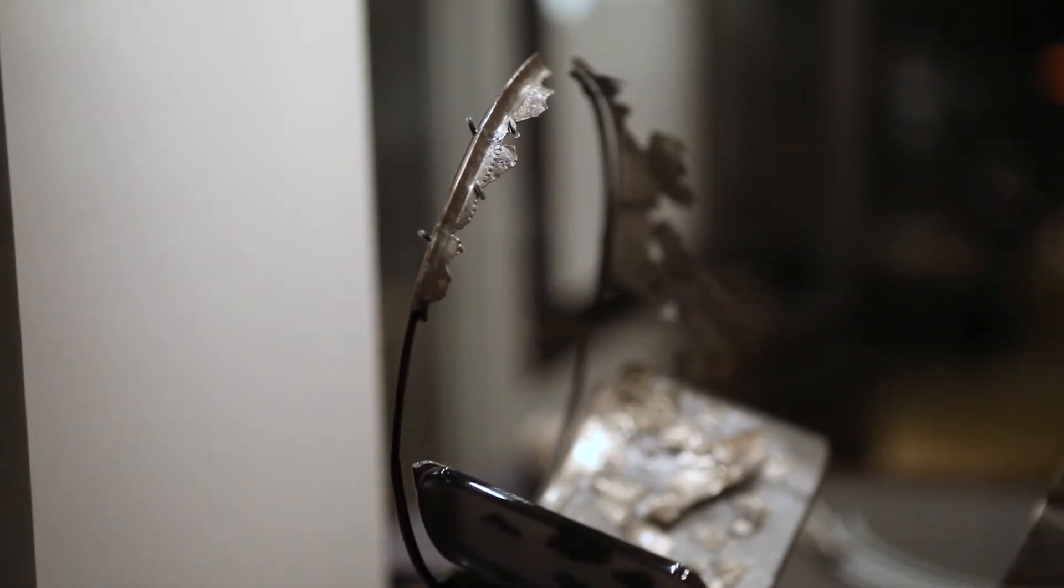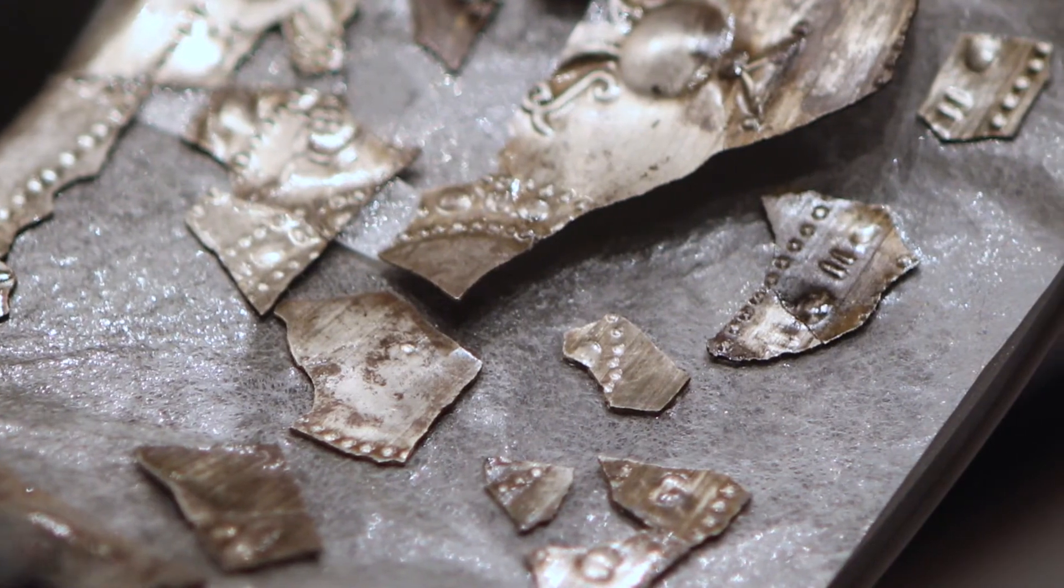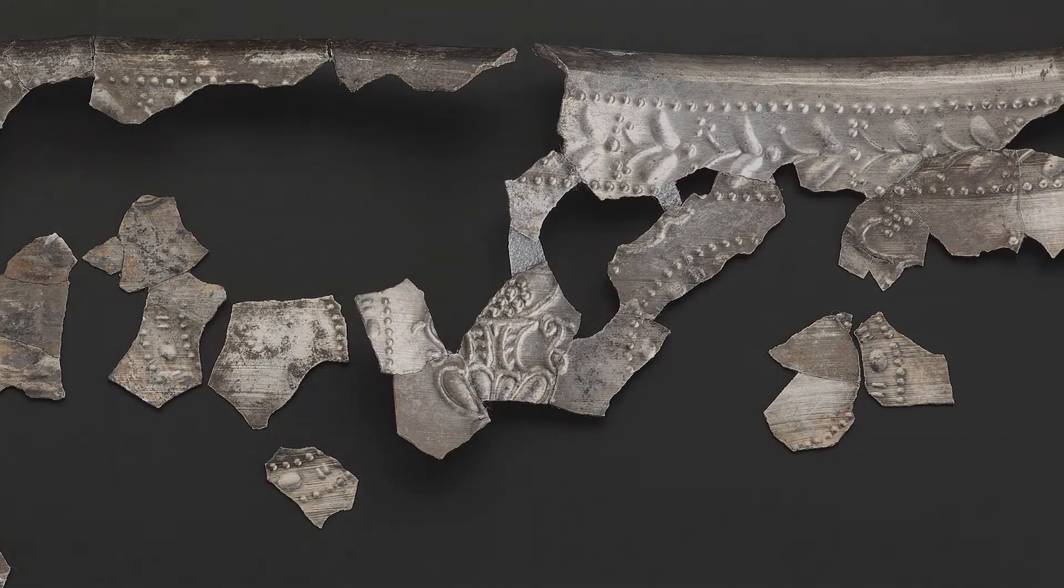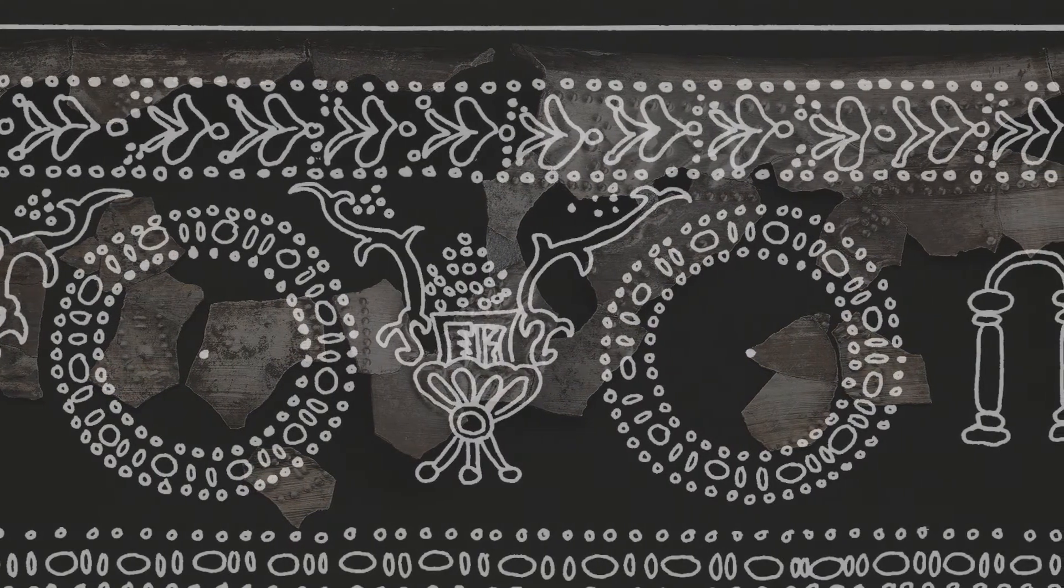The third one was a bowl with the decoration punched in from the outside. A wreath of olives and then vases with grapes piled high in them and vines growing out of them. An absolutely incredible vessel.